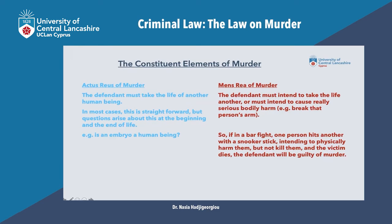If a person kills such a comatose patient, then he is committing the actus reus of murder. So that's the act that has to be completed in order for murder to take place. What about the thought — the mens rea of murder? The defendant must intend to take the life of another person, or the defendant must intend to cause really serious bodily harm. So what does that mean? It means that if you have a defendant who wants to kill someone, intends to kill someone, and in fact kills him, then he's a murderer.